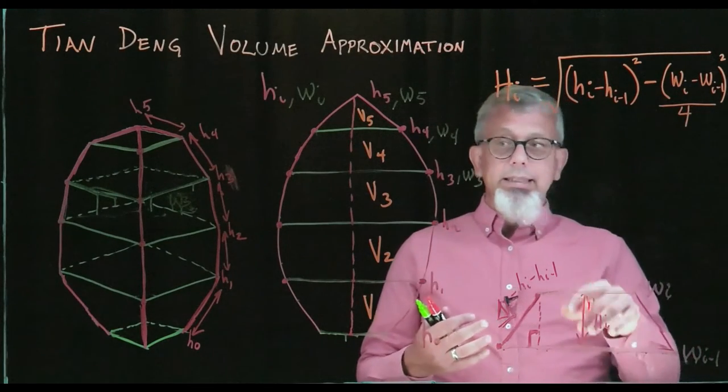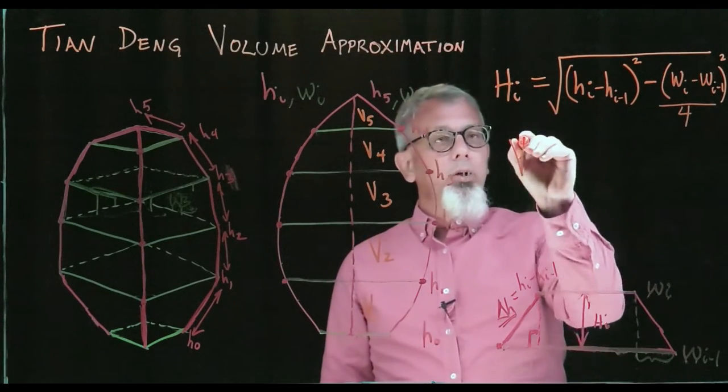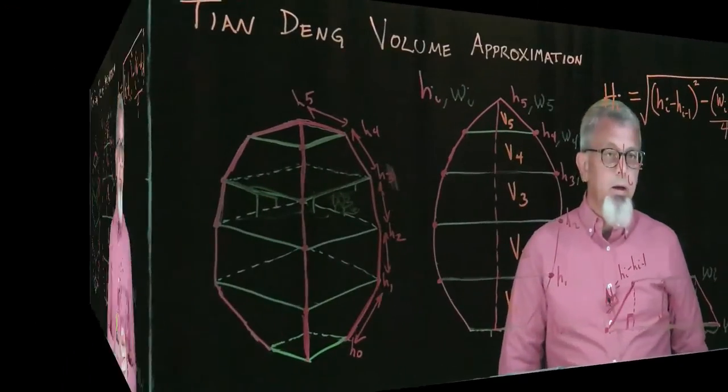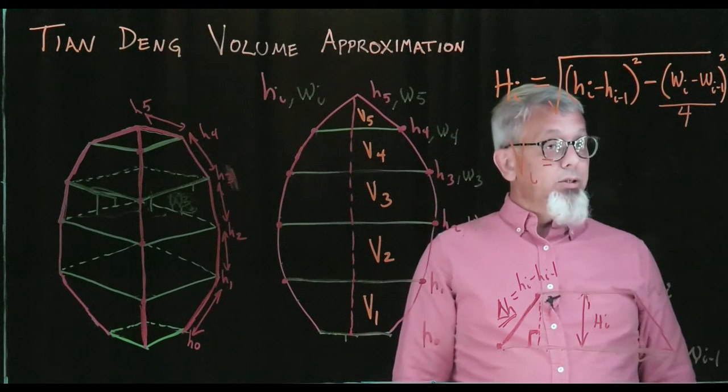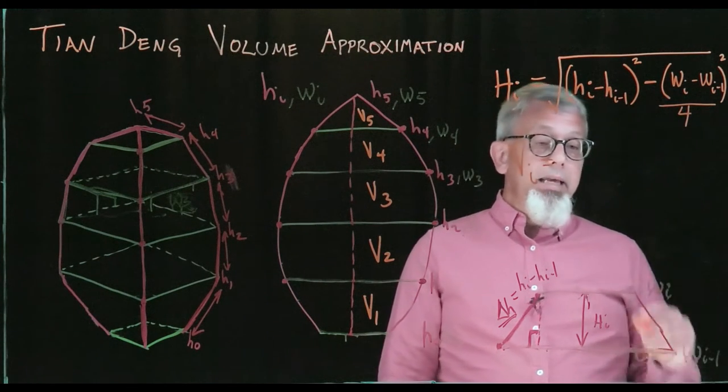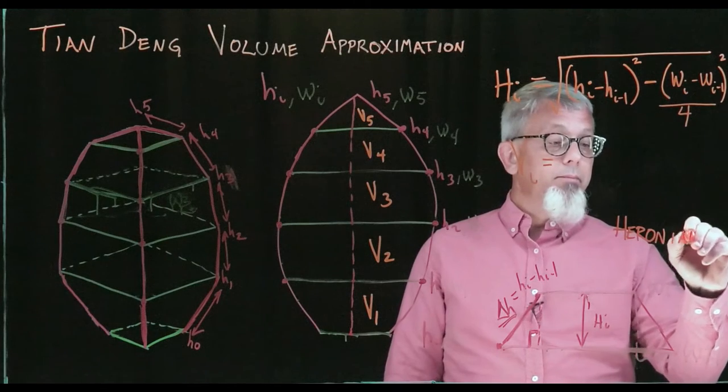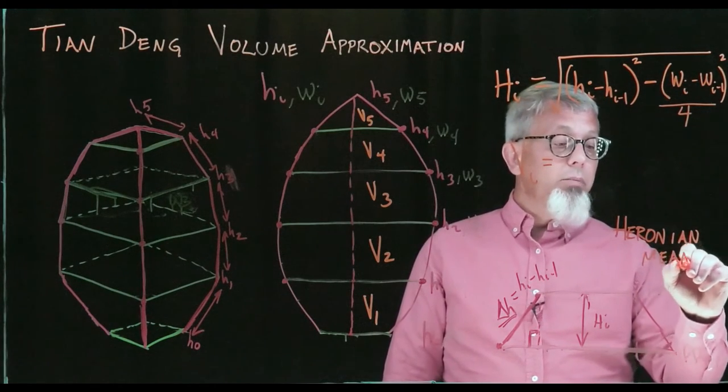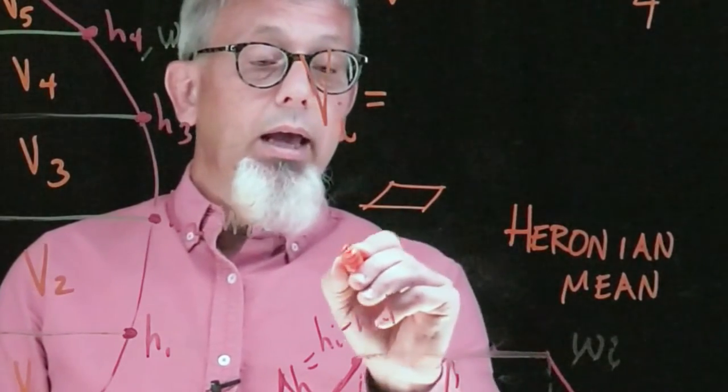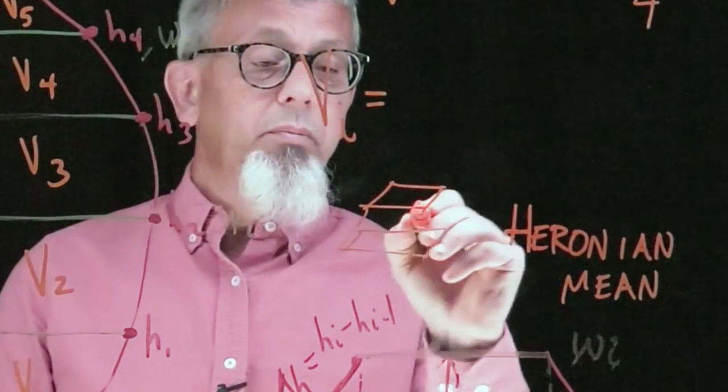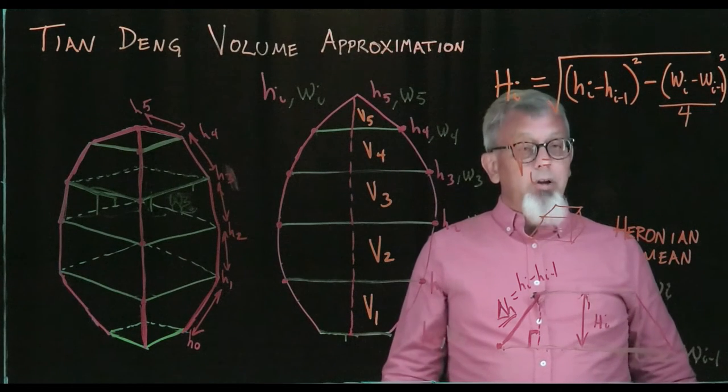We have the formula for the height of our frustum. That means we will be able to calculate this height from the information we have. Now, the next part is, what is the volume of a frustum? To find the volume of a frustum, we're going to go back to ancient Greek history and look for something known as the Heronian mean. Heron of Alexandria created something known as the Heronian mean.